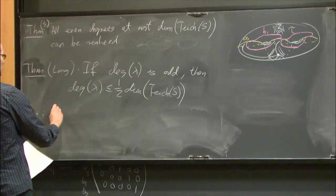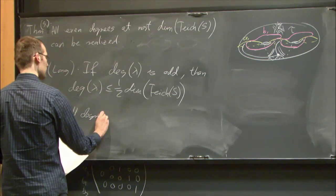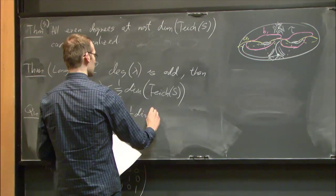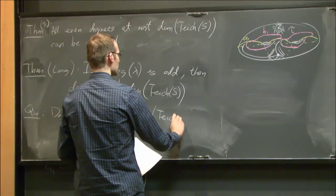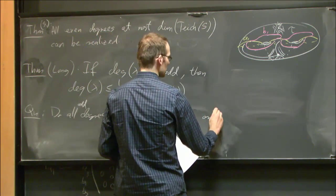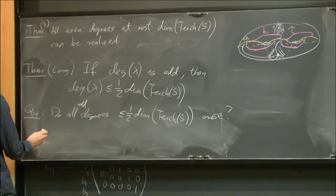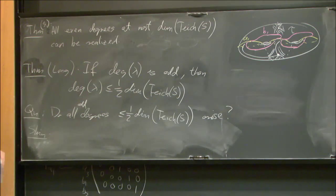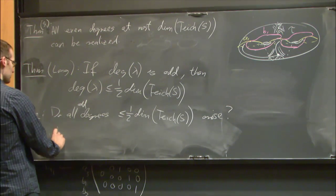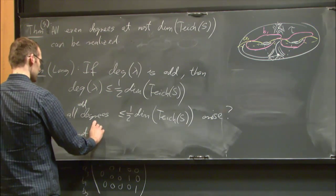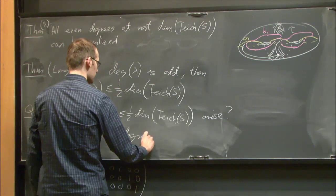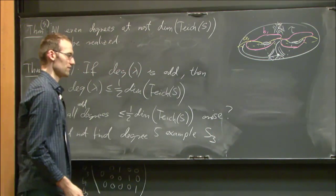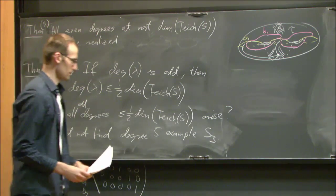The open question is: do all odd degrees at most this bound arise? Shin did computer experiments and found lots of examples in many cases, but he did not find a degree 5 example on the closed surface of genus 3, which is allowed by this bound.